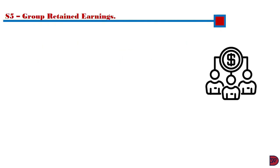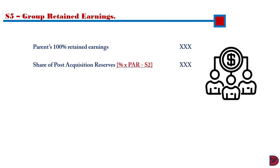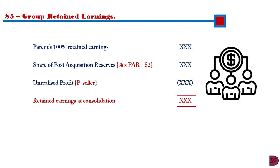The final step is the group retained earnings — to compute the total earnings of the parent. We start by capturing the parent's whole retained earnings, then add its share of post-acquisition reserve, which is the parent's percentage multiplied by the post-acquisition figure in step 2. If the parent sold to the subsidiary during the year and some goods remain, there will be unrealized profits to deduct. The retained earnings on consolidation will give us the total.